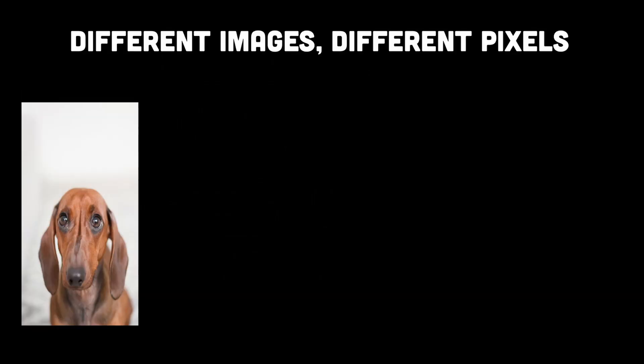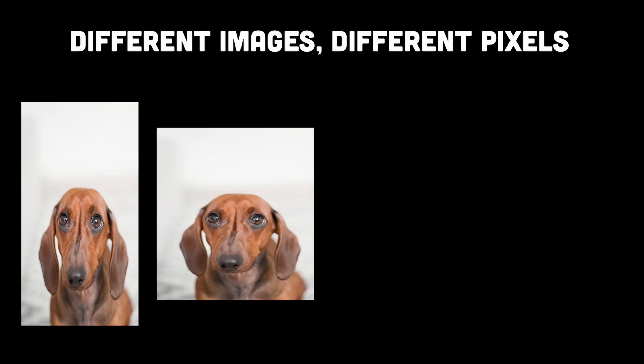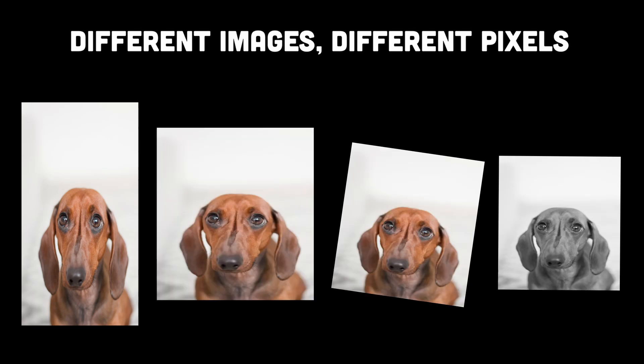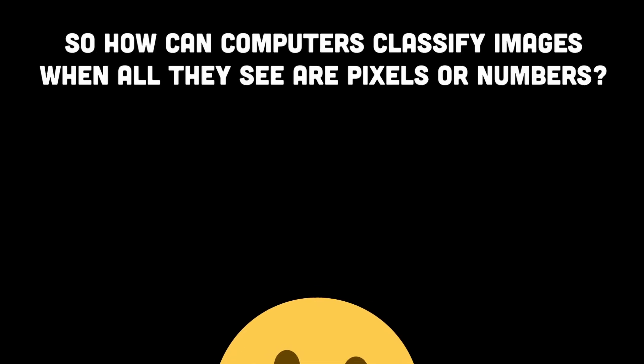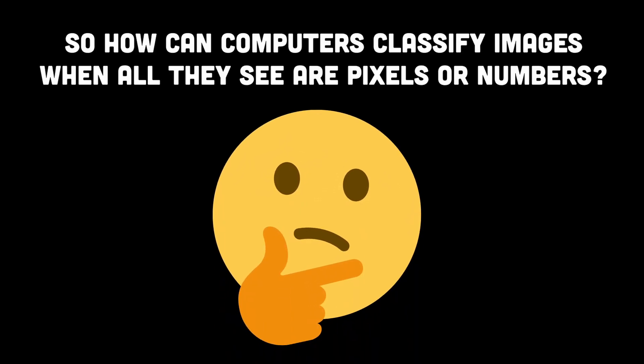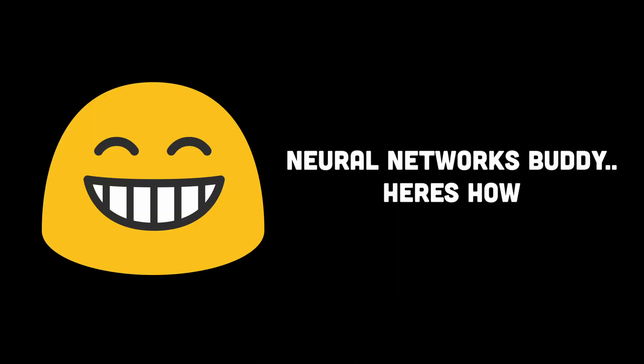So if the image was slightly different — let's say in terms of angle, width, height, or a different color — the pixels would be entirely different for each case, resulting in a different array of numeric values for each case. Now if it's so difficult, how can we ever classify an image using a computer?